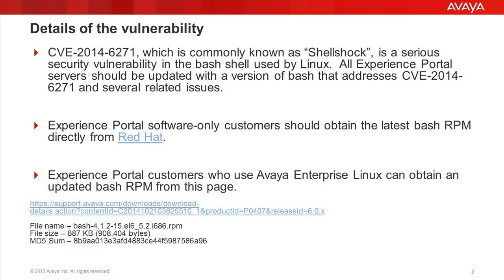For software-only customers, they are requested to obtain the latest Bash RPM directly from the Red Hat site. For customers who have Avaya Enterprise Linux, we have an updated Bash RPM from our support site. You can find the link here — the file name is bash-4.1.2-15.el6-5.2.i686.rpm — and this file can be obtained from support.avaya.com.